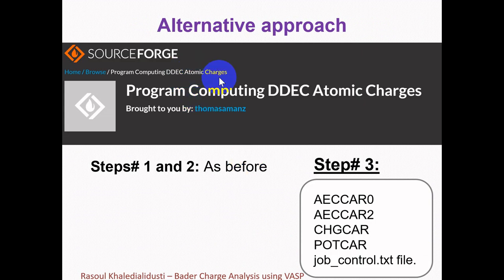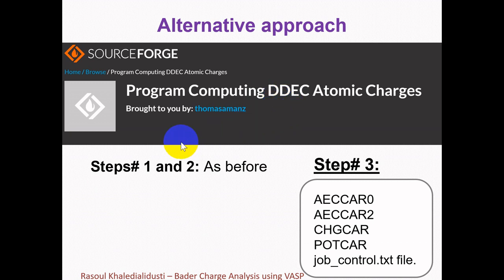The methodology described so far requires some manual work. There is also an alternative approach: the Chargemol program, which computes density derived electrostatic and chemical (DDEC) net atomic charges and atomic multipoles for periodic and non-periodic systems, as well as bond orders. The link to download this program is provided in the description. The program performs atomic population analysis to determine DDEC net atomic charges, atomic spin moments, and bond orders, and analyzes electron and spin density distributions generated by quantum chemistry.